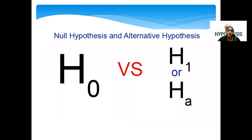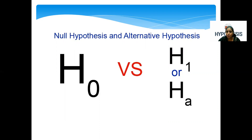In any experiment, there are two categories of hypothesis: null hypothesis and alternative hypothesis. Null hypothesis is denoted by H0. Alternative hypothesis is denoted by H1 or HA.